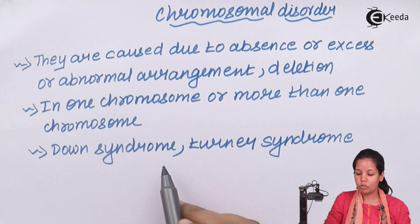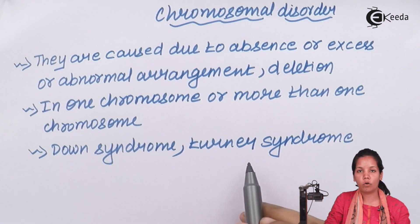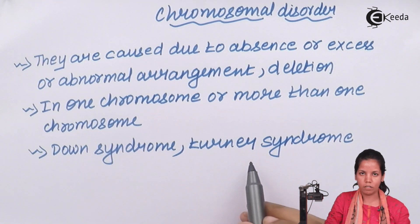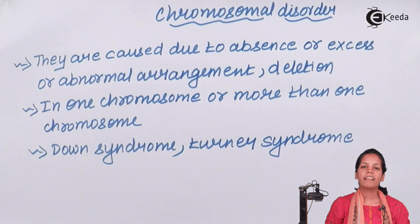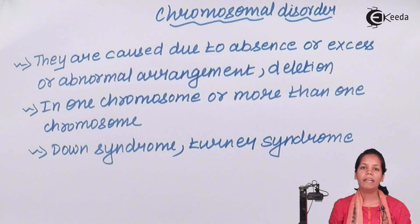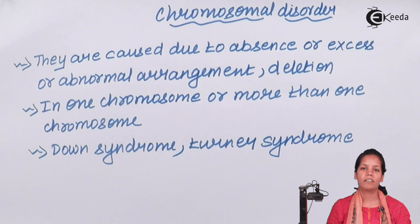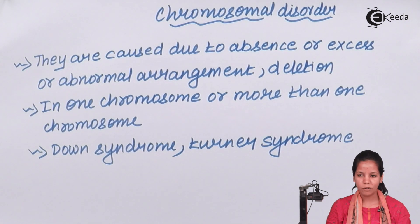Down syndrome and Turner syndrome are a few examples of chromosomal disorders. In this part of the chapter we studied what chromosomal disorder is, which is quite different from Mendelian disorder. I hope students are very clear with this concept. Thank you.